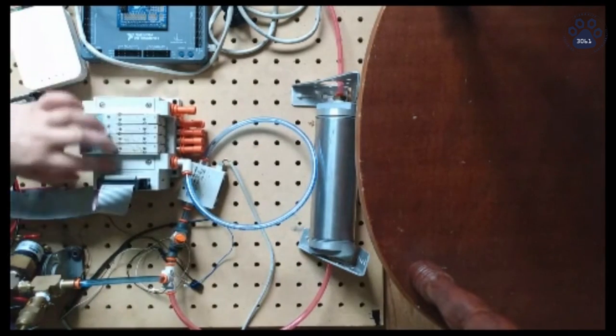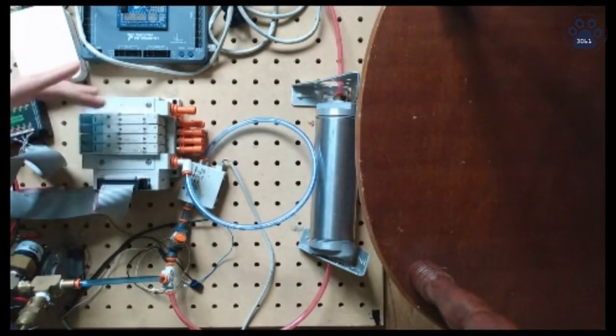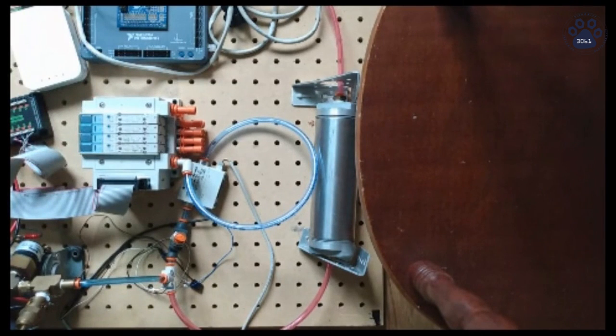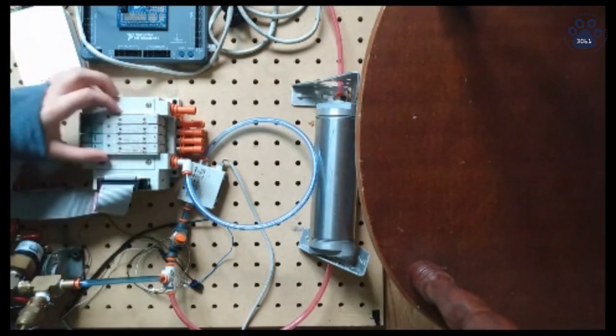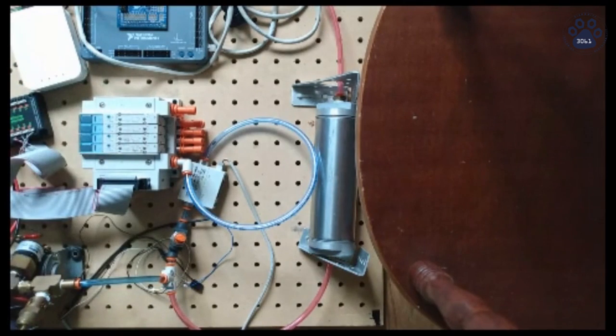The manifold is what houses solenoids. Technically, a manifold isn't necessary to a functioning pneumatic system, but we like to use one because keeping all the solenoids in one place like this makes it easier to troubleshoot and trace air leaks.